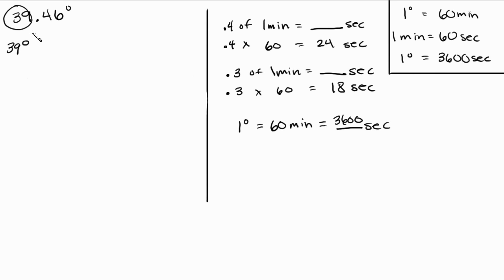First of all, this is 39 degrees. Now take the 0.46, 0.46 times 60, and you're going to get 27.6, right? 27.6, and that's going to be in minutes.